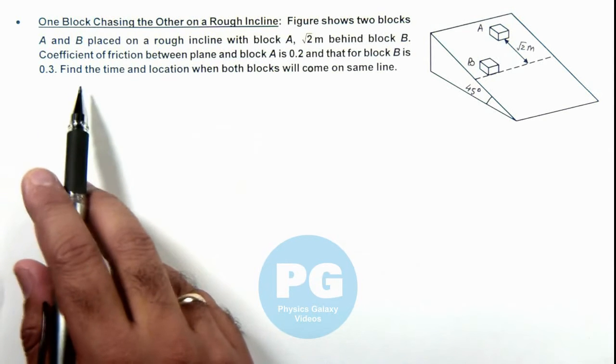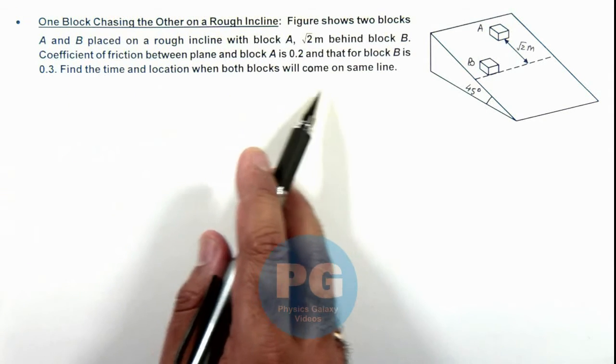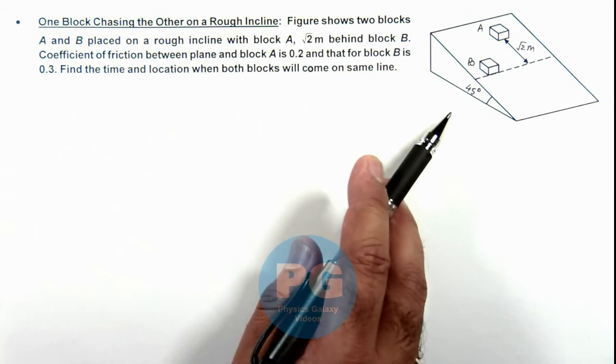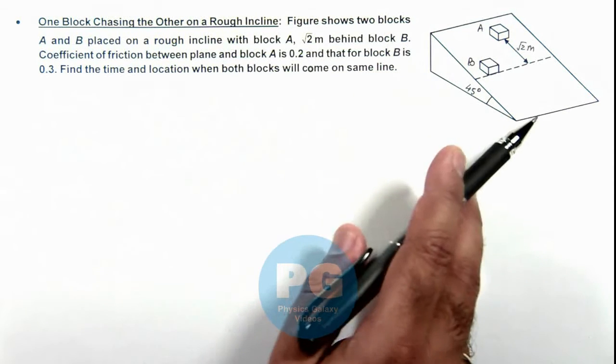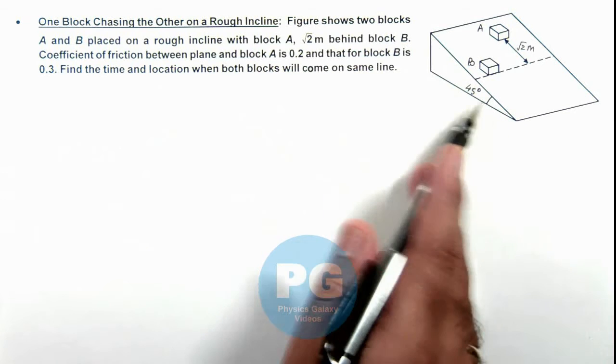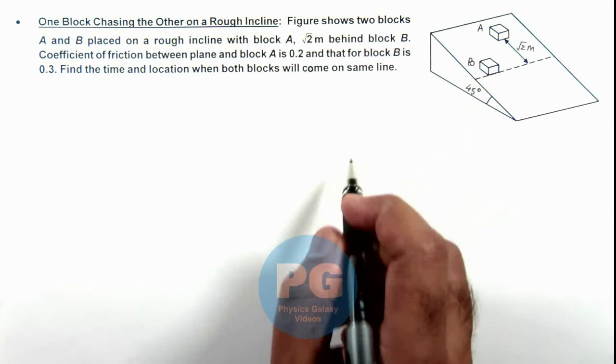We are required to find the time and location when both blocks will come on the same line. In this situation as both of these are sliding, that means the angle of incline is greater than the angle of repose.